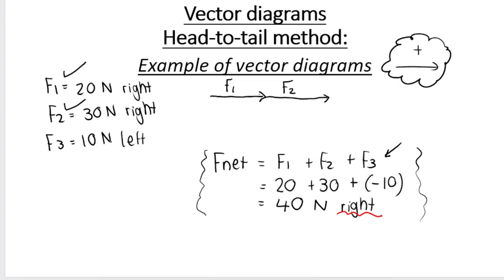The third force vector is 10 Newton to the left. The tail of F3 still needs to start at the head of F2, but because it's going to the left, it needs to point that way. So it's still head-to-tail — the head of F2 is touching the tail of F3. We draw F3 slightly offset so it remains visible.